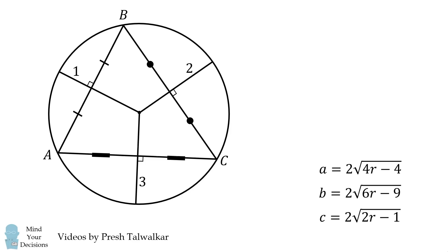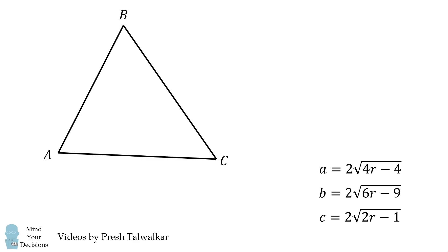From here, what do we do? Well, let's take a look at just this triangle and consider angle A. We can use El-Kashi's law of cosines to solve for the cosine of angle A. We have a squared is equal to b squared plus c squared minus 2bc multiplied by cosine of angle A.